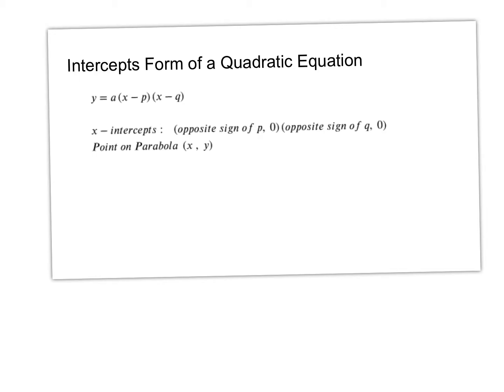Okay, we're going to be using something called the intercepts form of a quadratic equation. So we're going to be using this formula: Y equals A times X minus P times X minus Q.